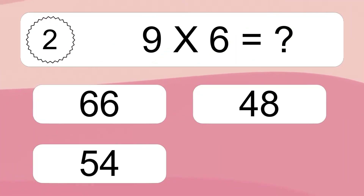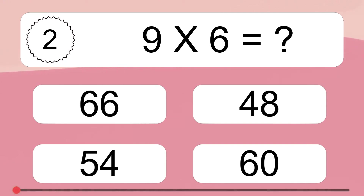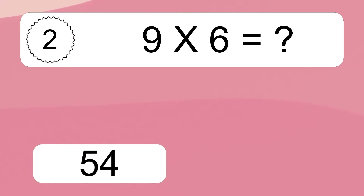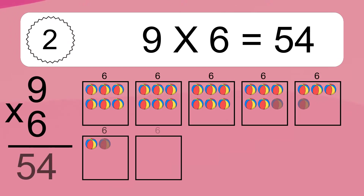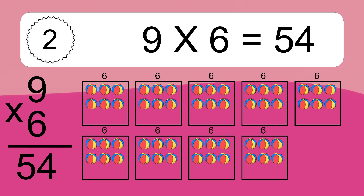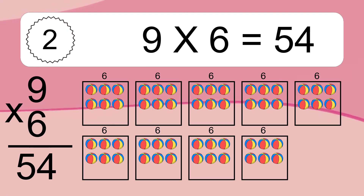Nine times six equals what? Nine times six equals 54. We have nine boxes, and each box has six colorful balls inside. If you count all the balls in all the boxes together, you will have nine times six balls.